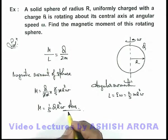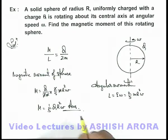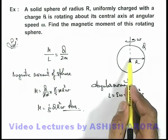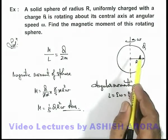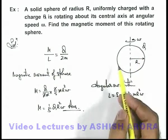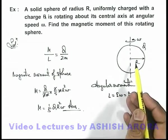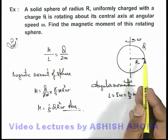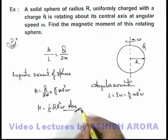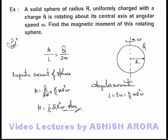And the same result we can also evaluate by considering elemental shells within the sphere and integrating the magnetic moment of the shells from zero to R limits. That alternative solution I leave for you guys to attempt as an exercise and verify that you are getting the same result by the method of integration also.